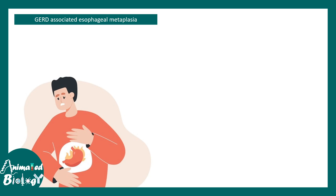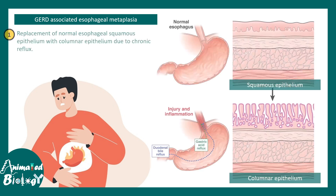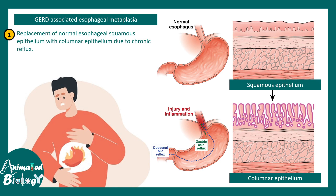Another example is GERD. People who have esophageal acid reflux problems may experience a type of metaplasia where the normal esophageal cells, which are squamous epithelium, get converted into columnar epithelium upon repetitive gastric acid reflux. This kind of conversion helps to prevent the harmful effects of gastric acid reflux.